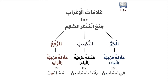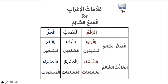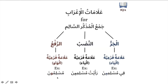So the sign of Muslimuna being Marfu' is the Waw, not the Dhamma. Muslimuna is Marfu' — it is in the position of Raf'a — with the Waw, not with the Dhamma. So it takes a secondary sign.